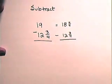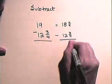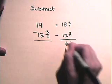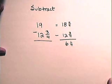Subtract the fractions. Four-fourths subtract three-fourths is one-fourth. 18 subtract 12 is 6. So, the difference here is 6 and one-fourth.